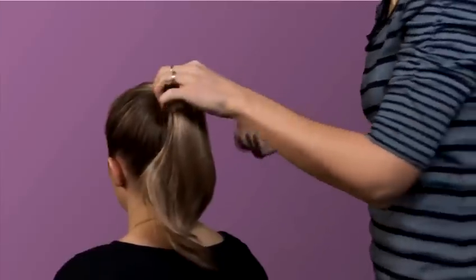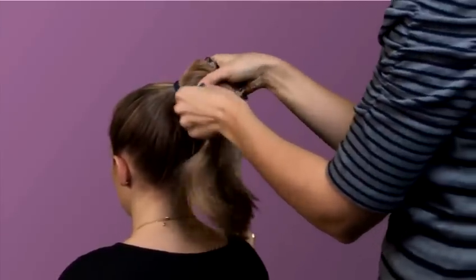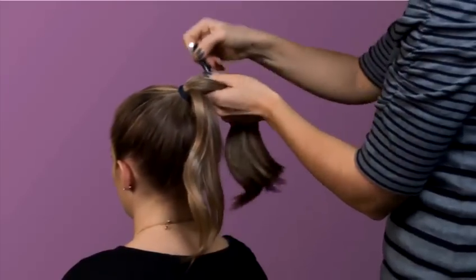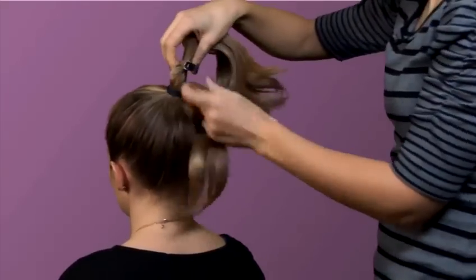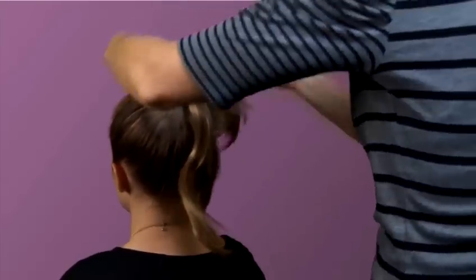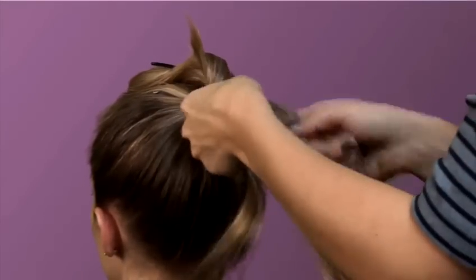Another way how to hide the hairband is to create a braid from your hair. Again, take a section from the bottom of your ponytail and create a simple braid.